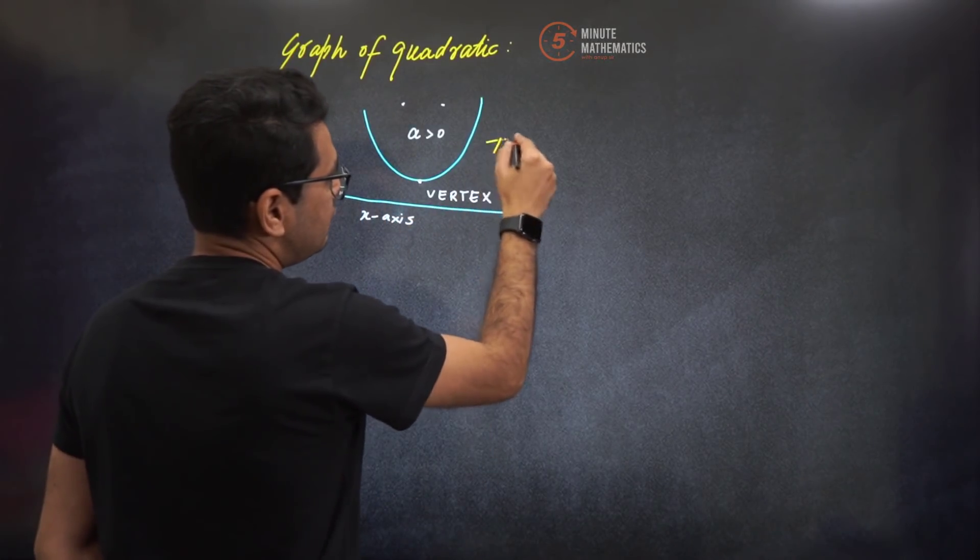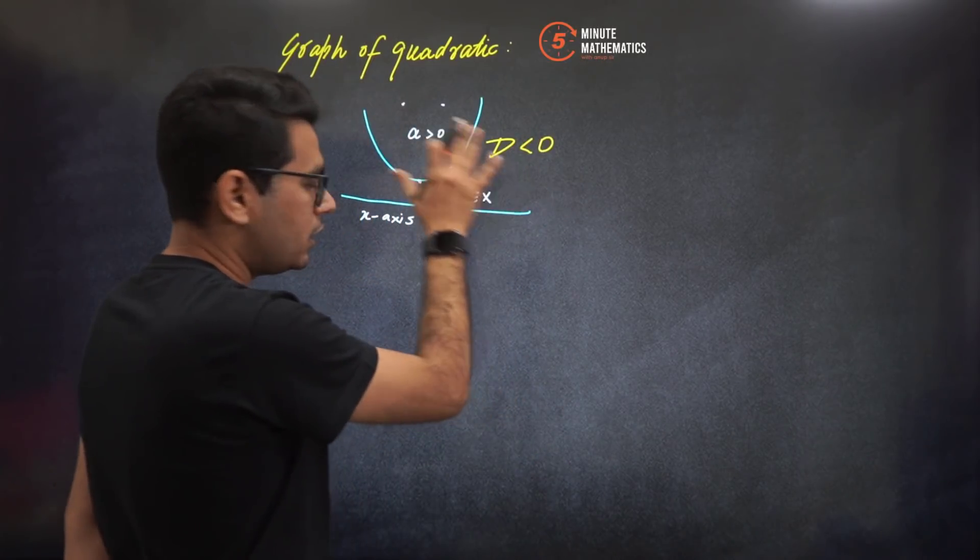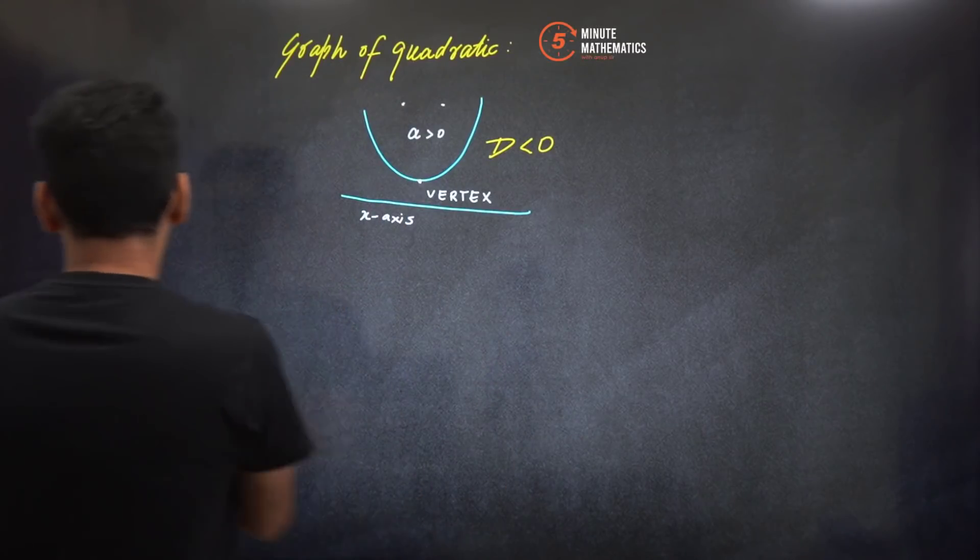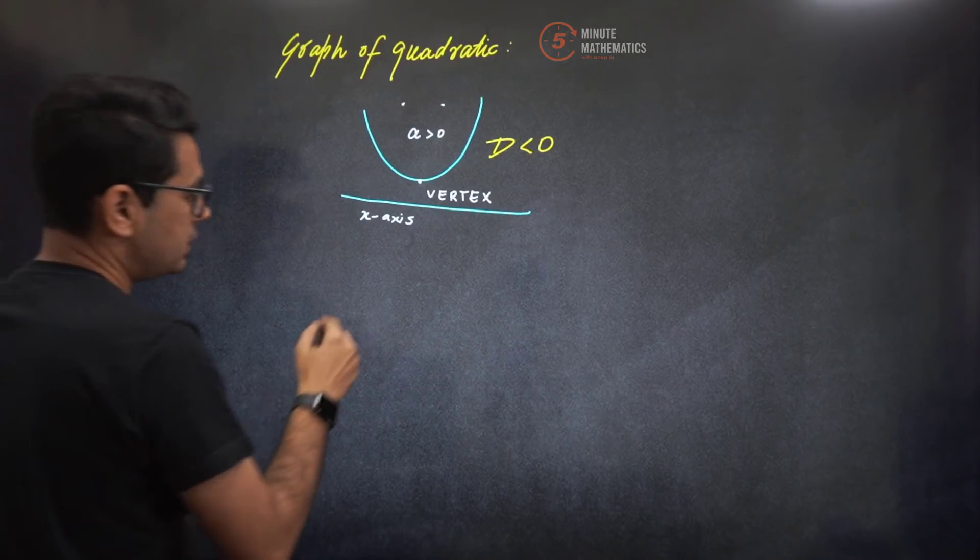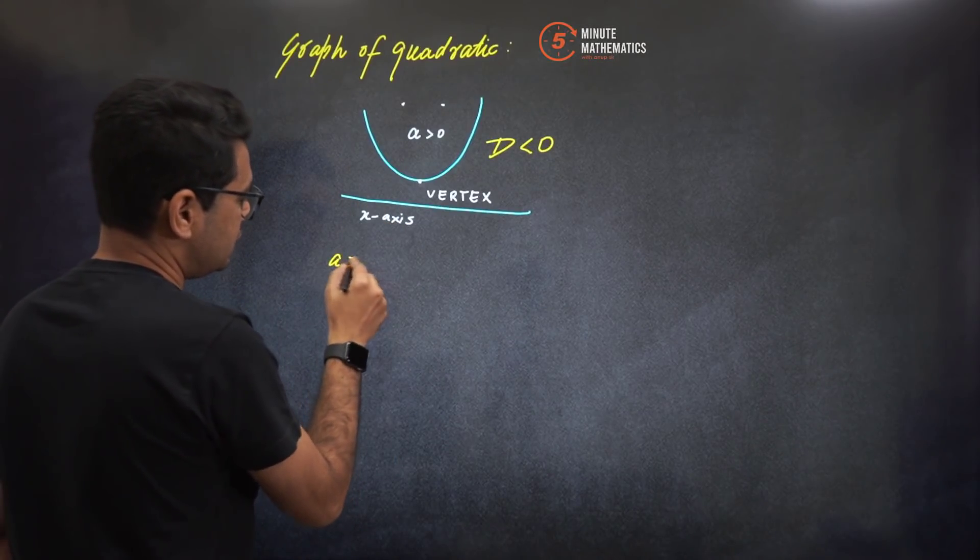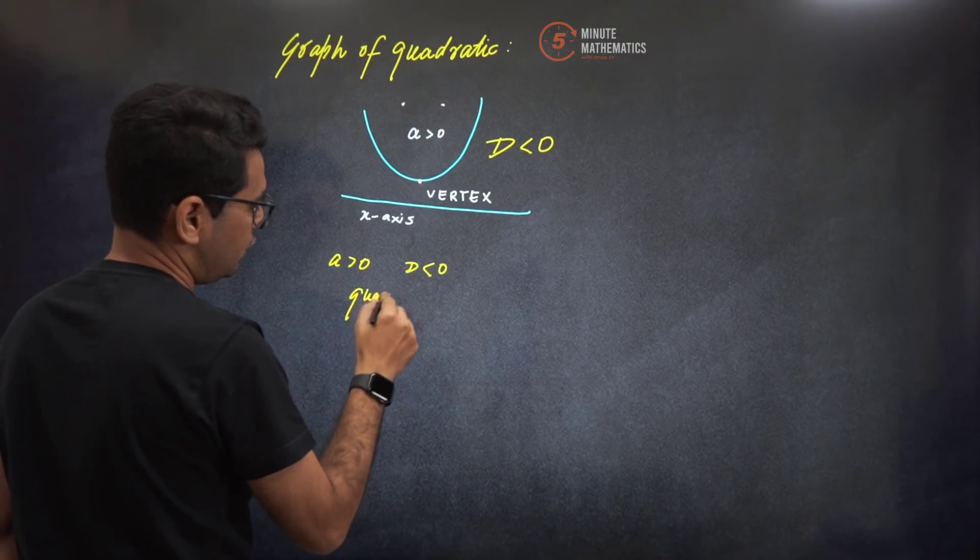More importantly, I know that you have understood this, you have done this in class ninth and tenth also. But what we forget, what we do not remember is this: when a is greater than zero and d is less than zero, the quadratic is always positive.